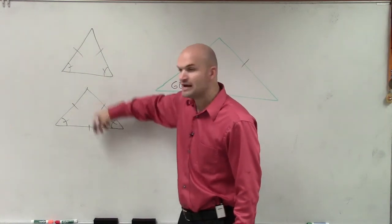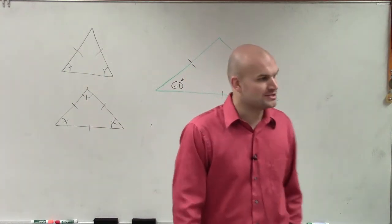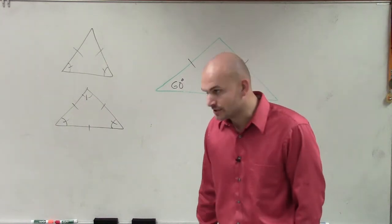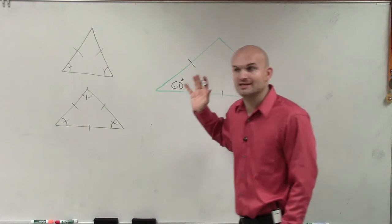And then you can do that with all three of them. So guess what? All three angles are equal in measure, which we call an equiangular triangle, right? Remember when all the sides are equal, we call it equilateral.